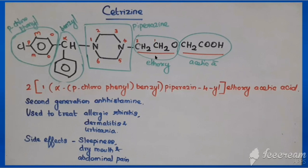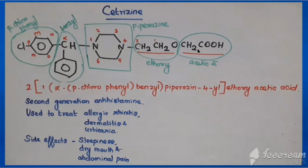The chemical name: ethoxyacetic acid is taken as the parent. At the second carbon, the substituent is attached. The name is 2-[alpha-(para-chlorophenyl)benzyl-piperidine-4-yl]-ethoxyacetic acid. The difference between cetirizine and chlorcyclizine is that chlorcyclizine has methyl at the fourth portion of piperidine, whereas cetirizine has ethoxyacetic acid.